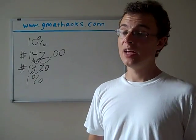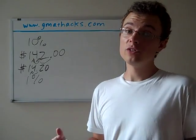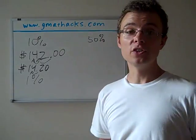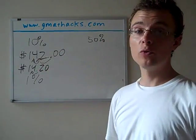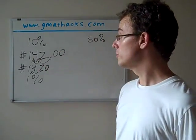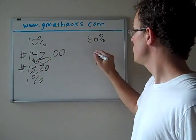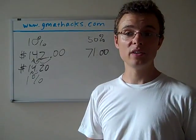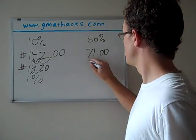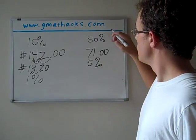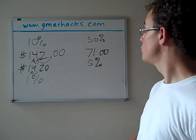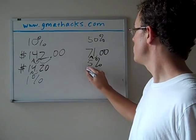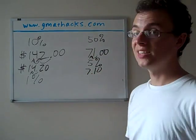10%, 1%, doesn't get any easier than that. Here's another easy one. 50%. You just take half. So in case of $142, you might have to think about it for a little bit. But $140, half of that is $70. Two, half of that is $1. So we're looking at $71. How about 5%? 5% is 1 tenth of 50%. So we just move the decimal point over one. And we've got $7.10.